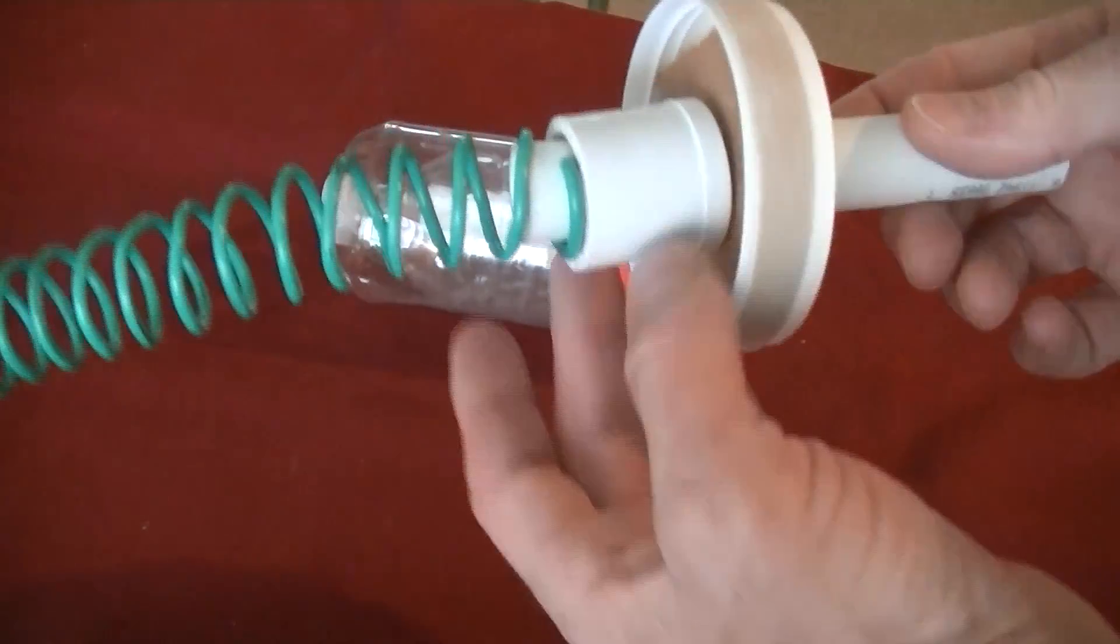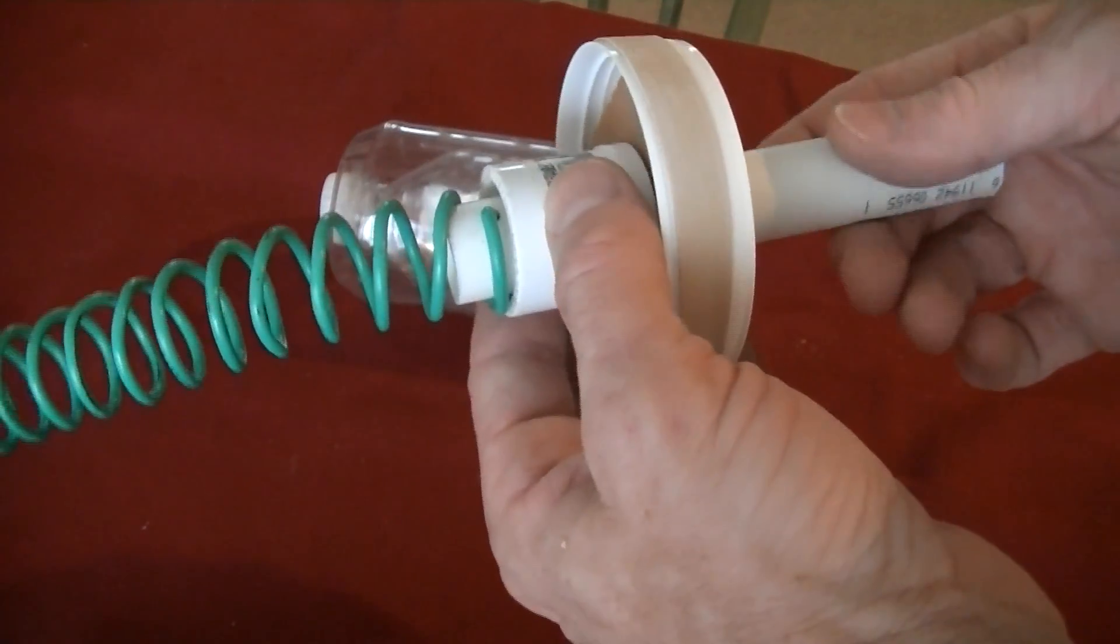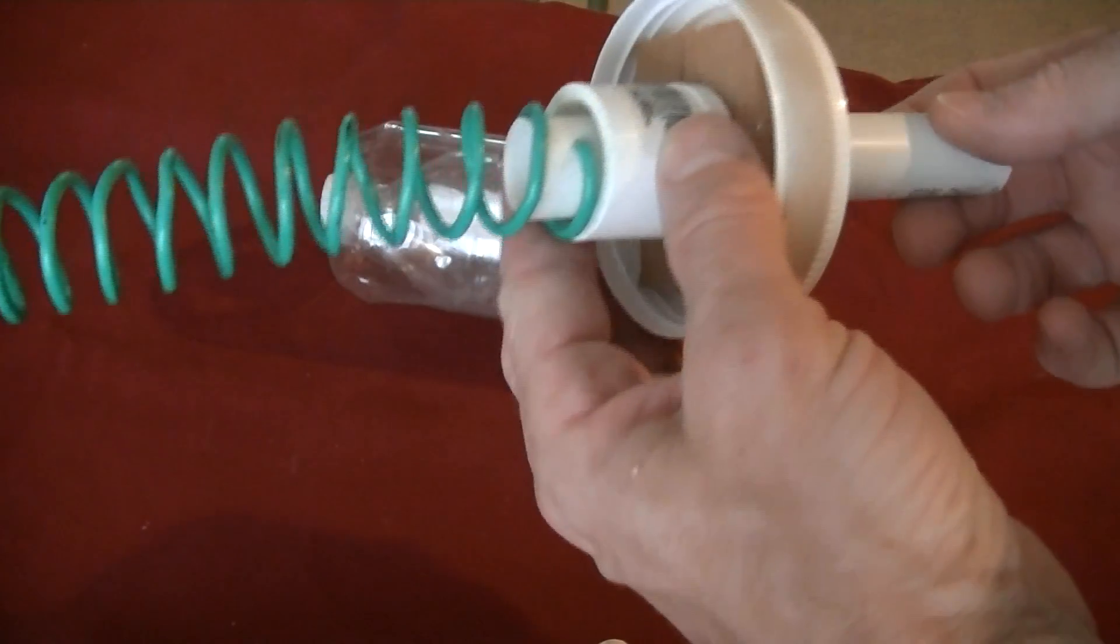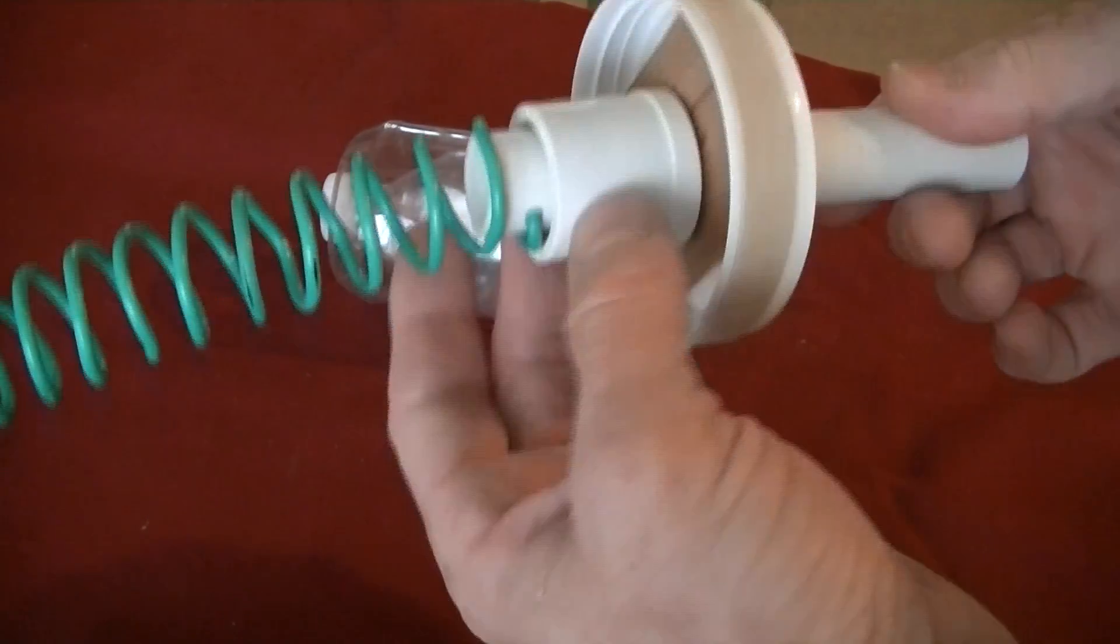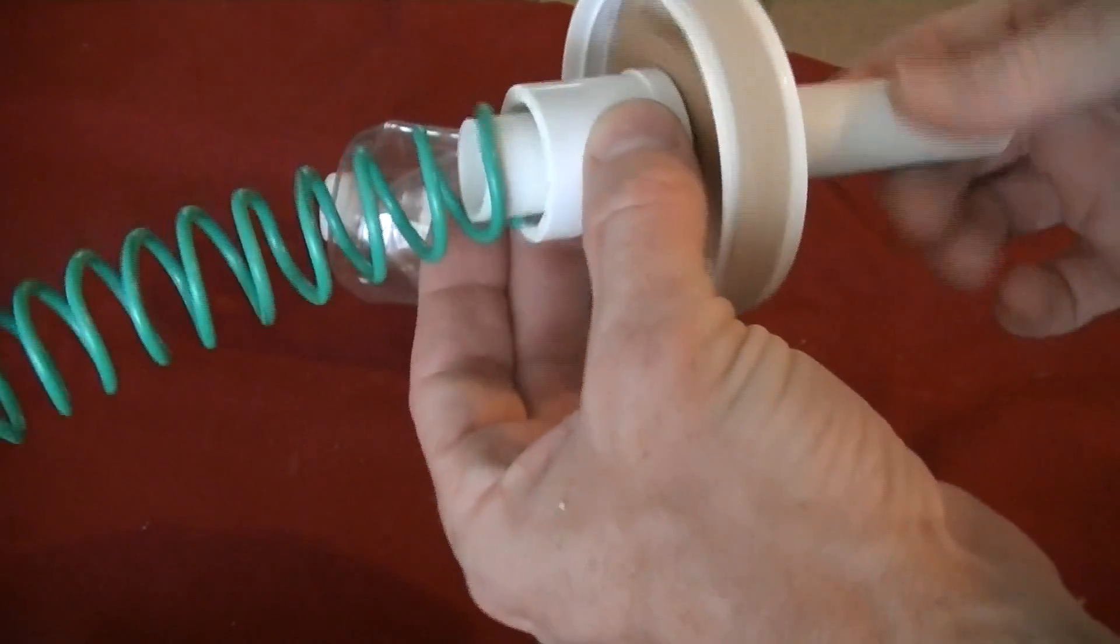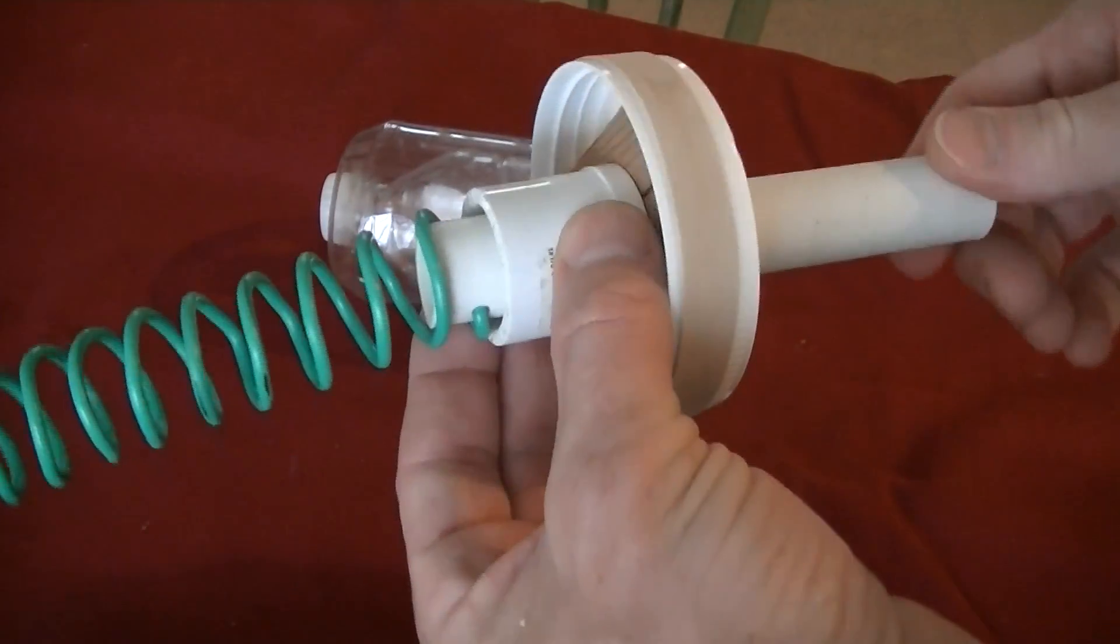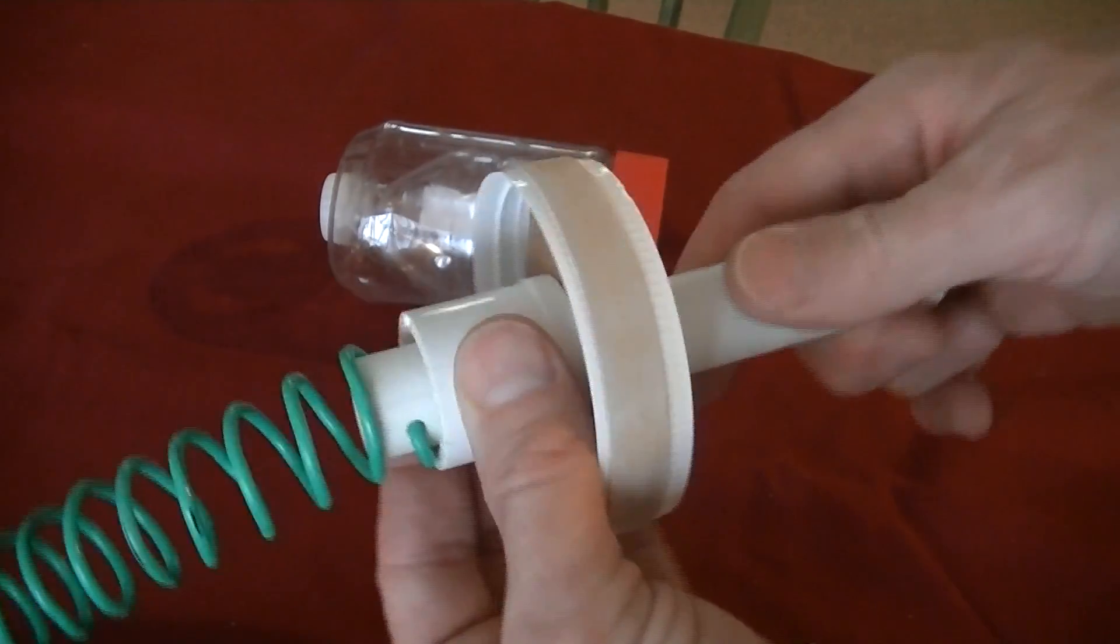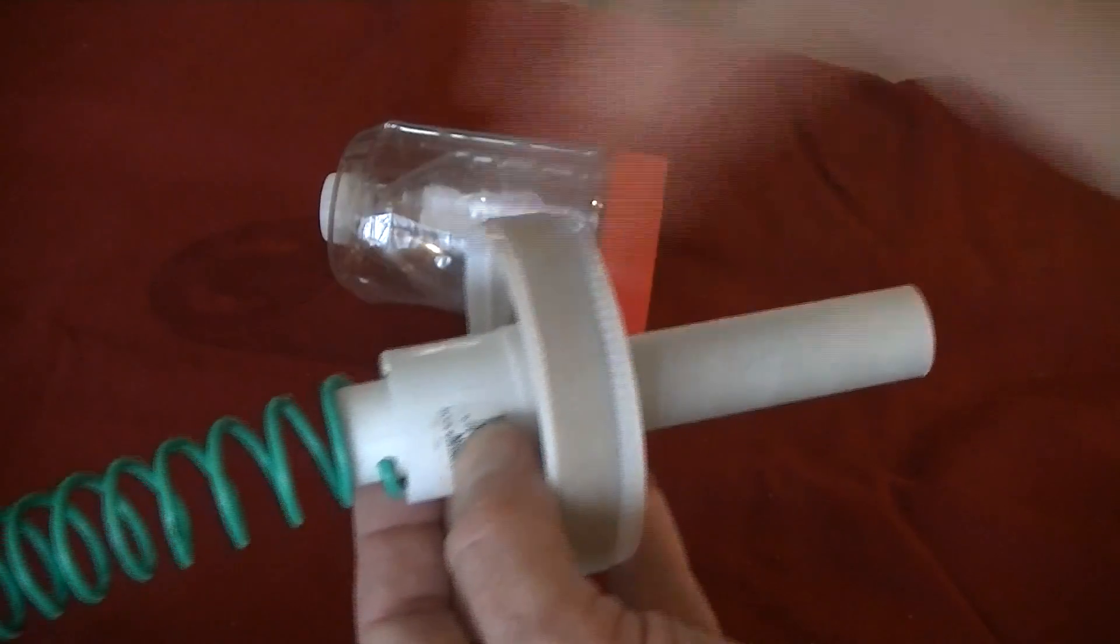It's actually a reduction coupling that reduces from a one-inch to a half-inch PVC. And I drilled it straight through so that it acts as a bearing. Instead of the one-inch pipe fitting tightly into this part and stopping right about here, I drilled through it.